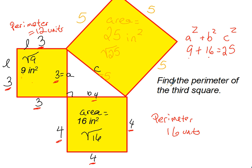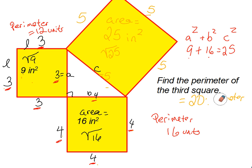The question is asking to find the perimeter of the third square. The first square had a perimeter of 12 because we added 3 plus 3 plus 3 plus 3. The second square had a perimeter of 16, adding 4, 4, 4, and 4. So on this third square we add 5 plus 5 plus 5 plus 5 to get a perimeter of 20 units for the third square.